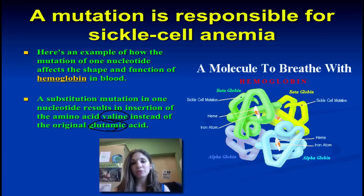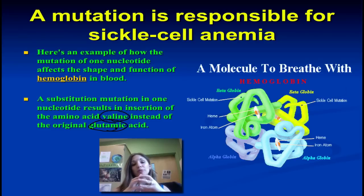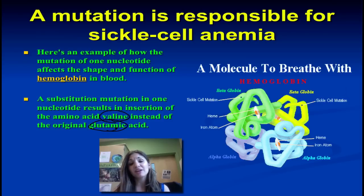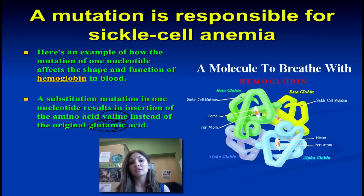That hydrophobic pocket is going to stick to other hemoglobin molecules. So instead of our red blood cells being this nice, round, plump shape, when the hemoglobin starts to stick to itself, it's going to make those red blood cells sickle and form rods. That in turn doesn't carry as much oxygen, gets stuck in the finer capillaries of the blood vessels, and therefore you have tissues that are not getting the oxygen they need to complete cellular respiration.